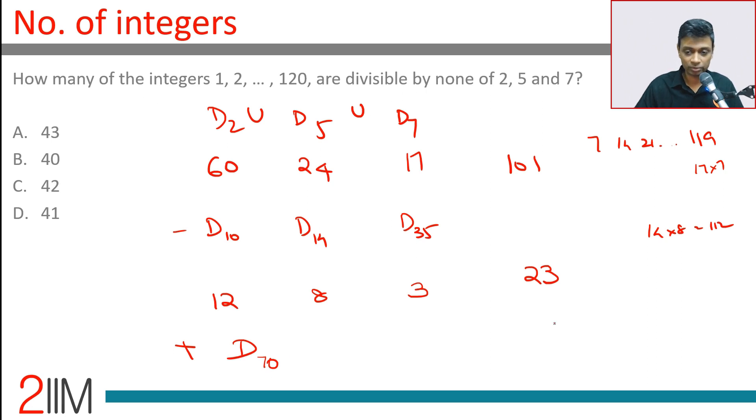We subtract this and add this: 101 minus 23 plus 1, which is 101 minus 22. 101 minus 22, 100 minus 20 is 80, so this is 79. There are a total of 120 numbers.